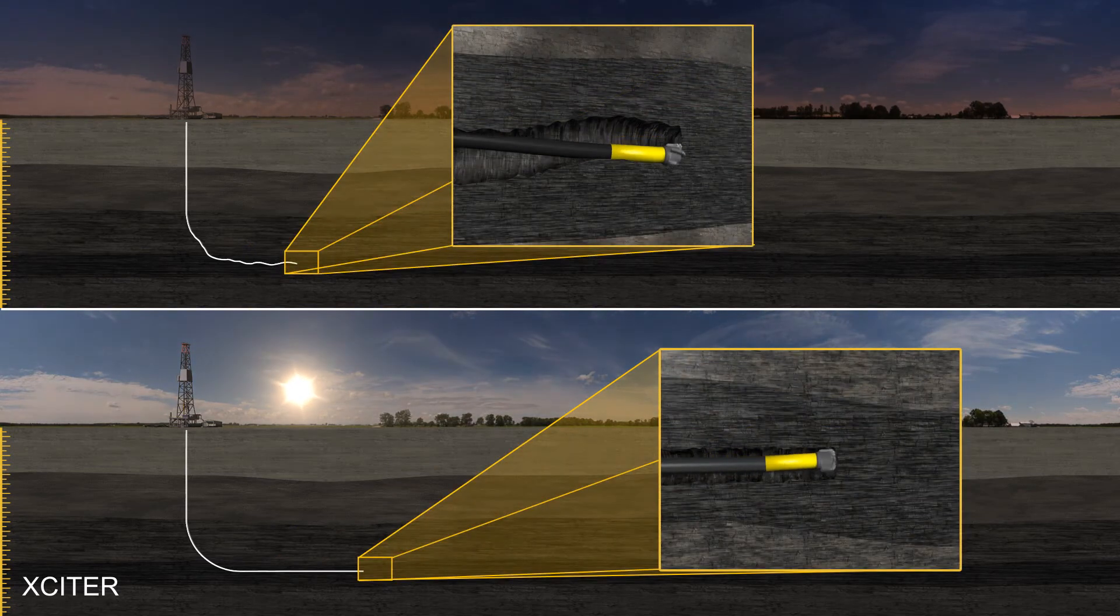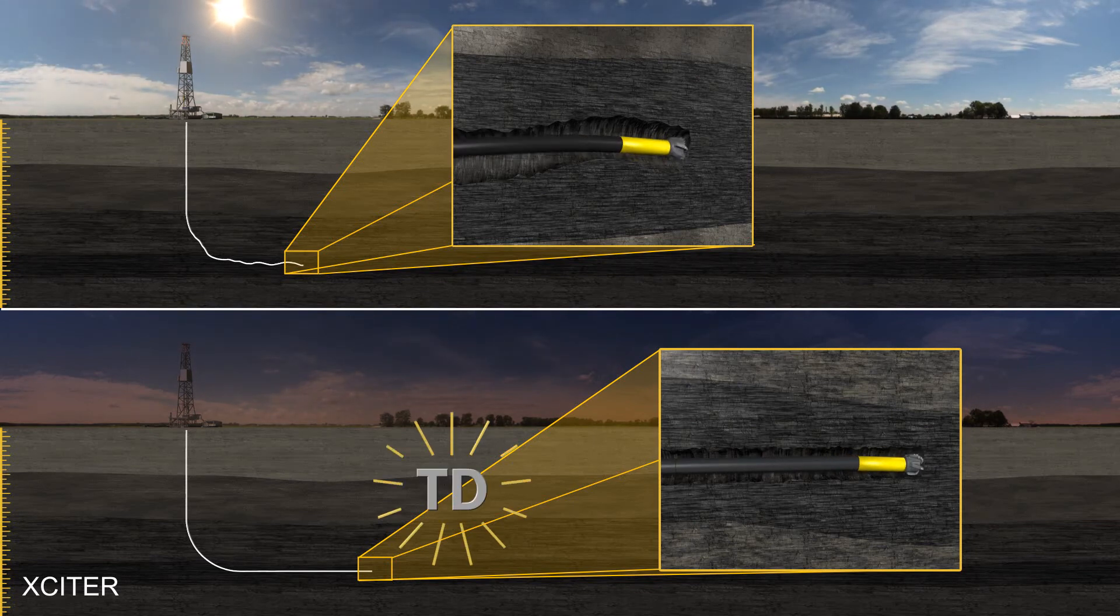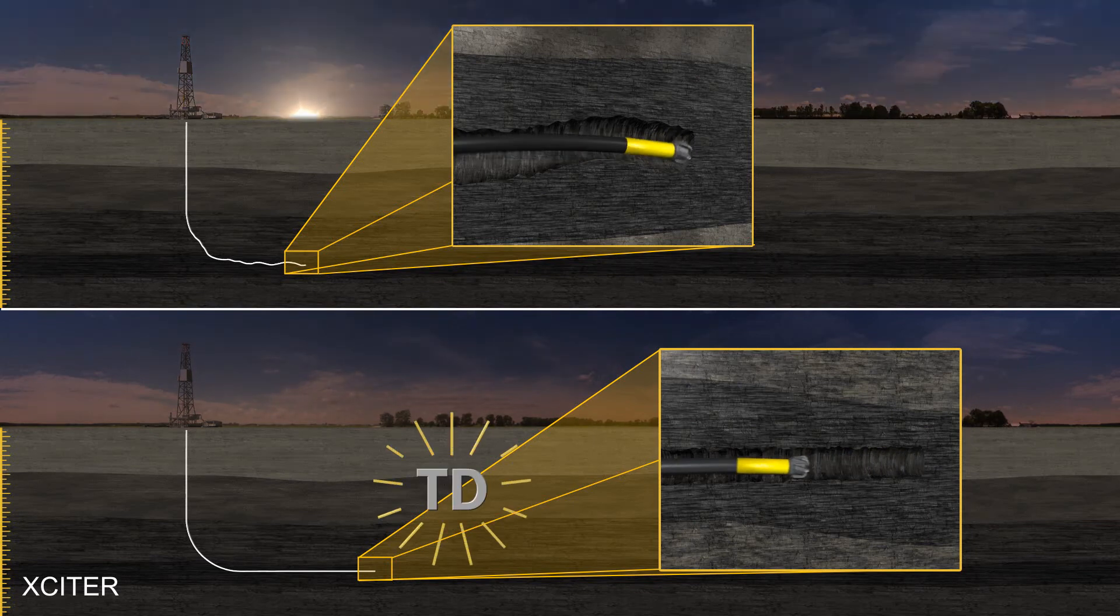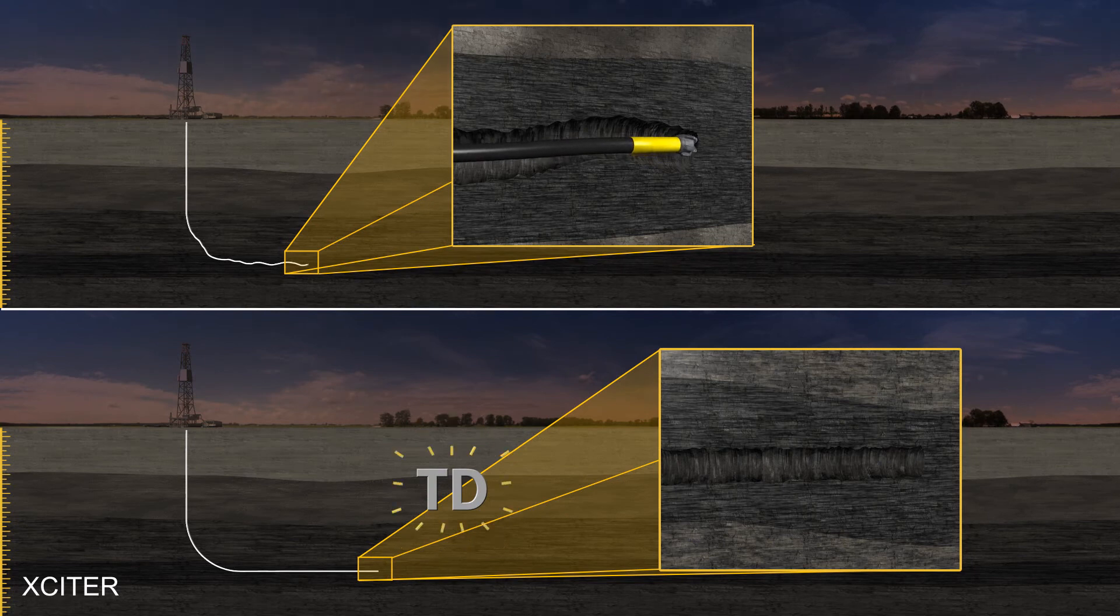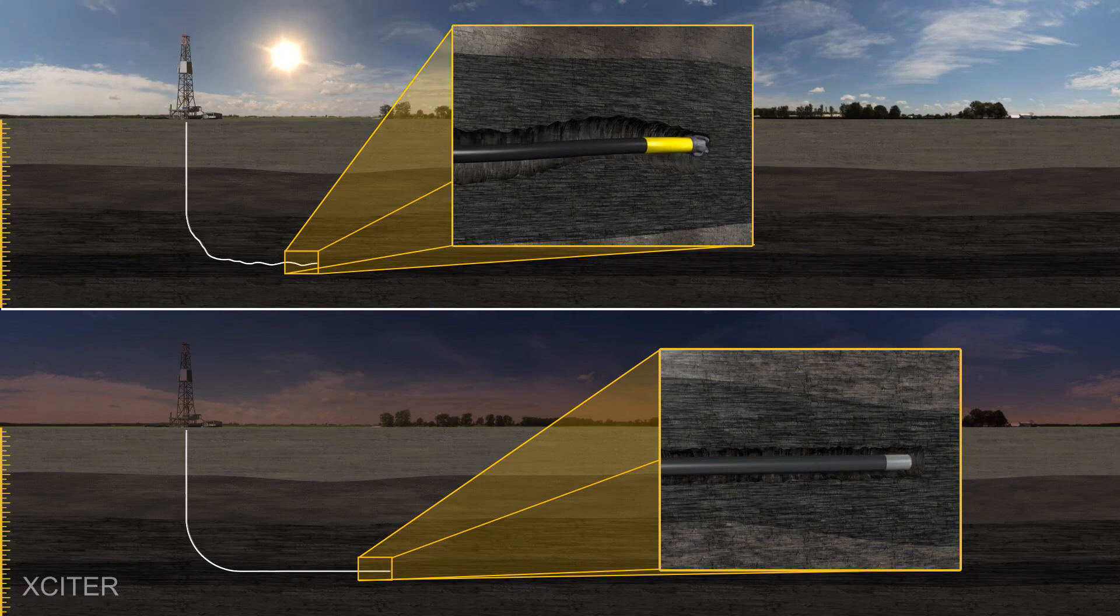The Exciter offers our customers the ability to drill longer, horizontal, and smoother build sections through improved directional control and better hole conditions, increasing your overall ROP. The Exciter is a highly reliable and simple solution to various friction-related drilling problems.